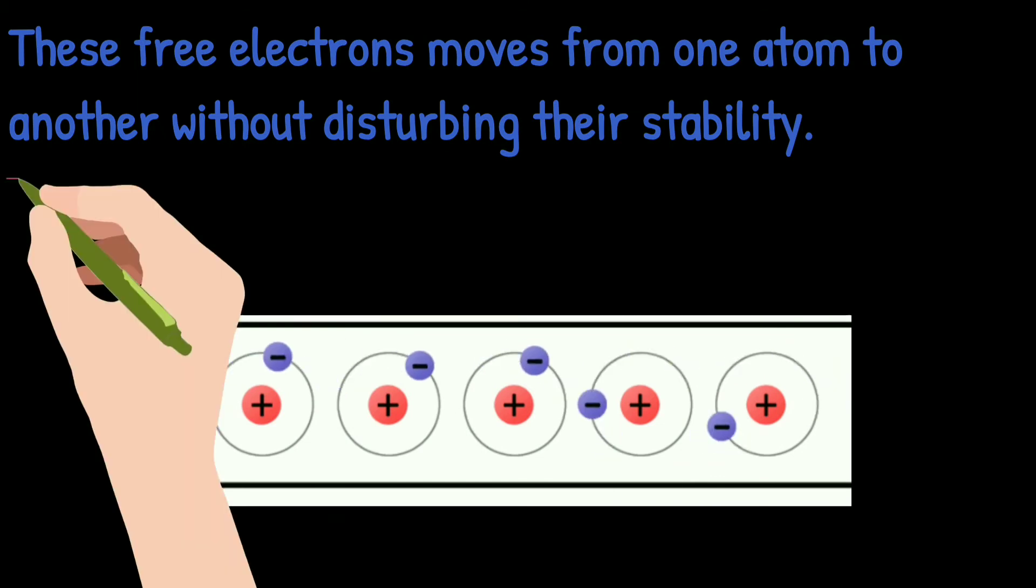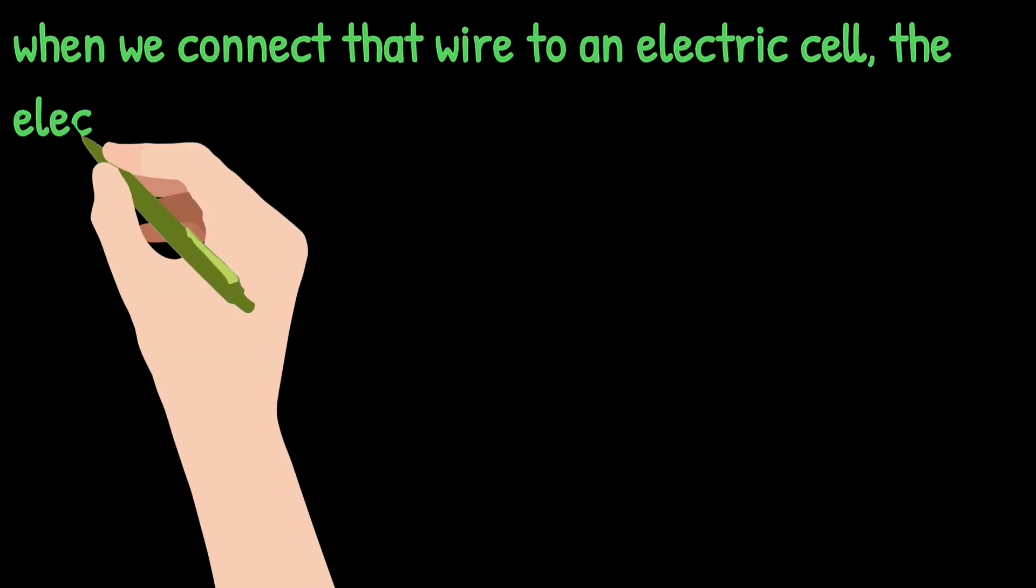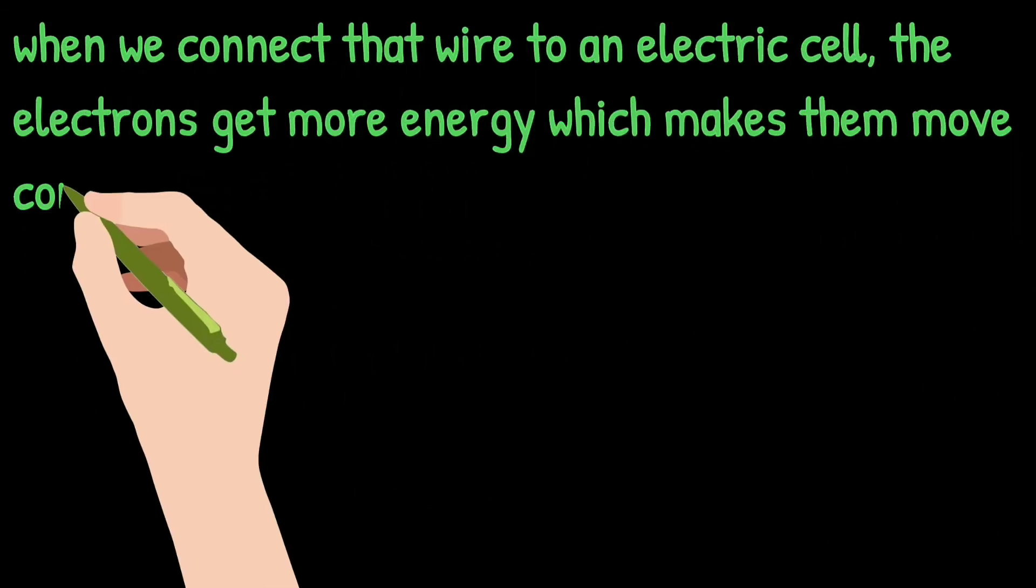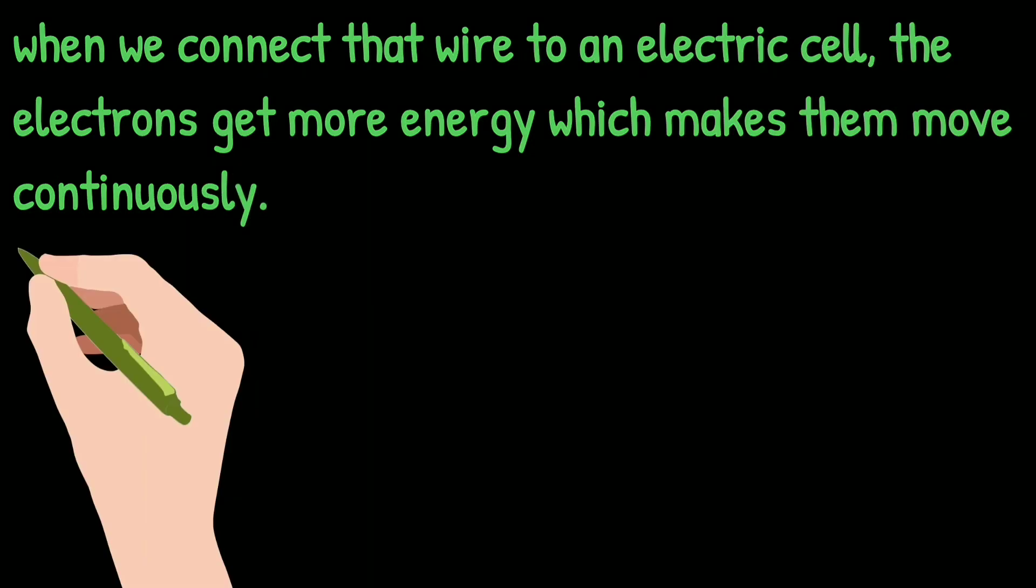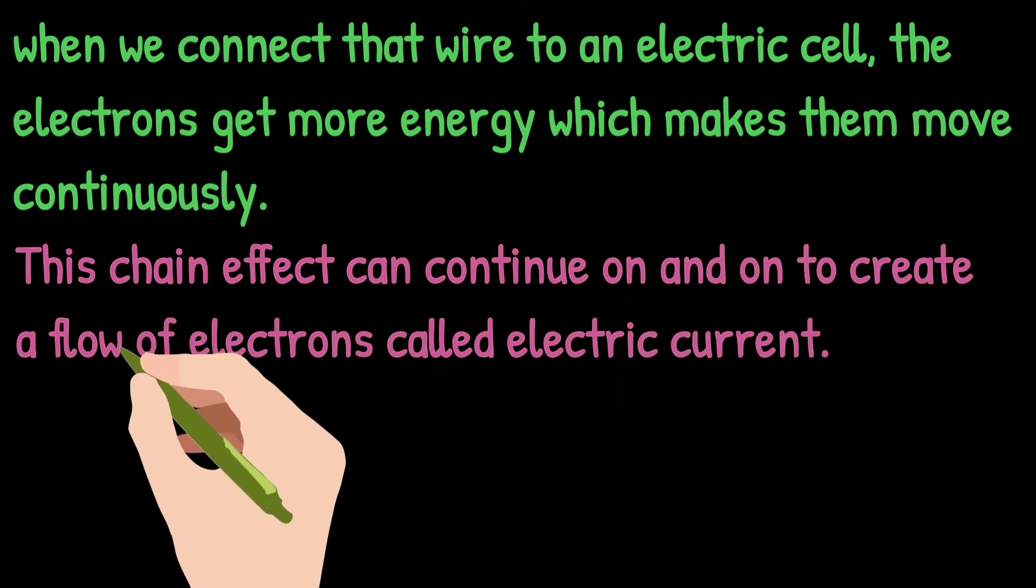When we connect that wire to an electric cell, the energy transfer takes place from the cell to the electrons. The electrons get more energy which makes them move continuously. This chain effect can continue on and on to create a flow of electrons called electric current.